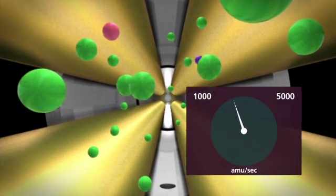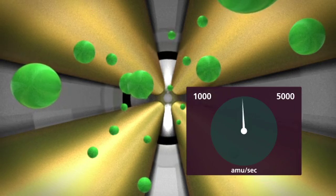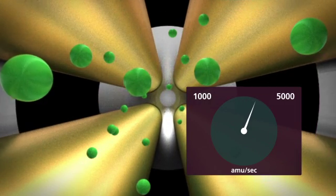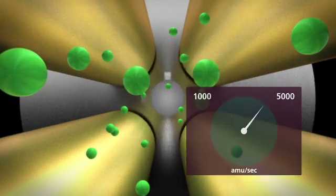Capable of the highest mass range attainable in an ICP-MS, the quadrupole refines the analyte beam with a final mass-to-charge filtration, and focuses it on a state-of-the-art dual-mode detector.